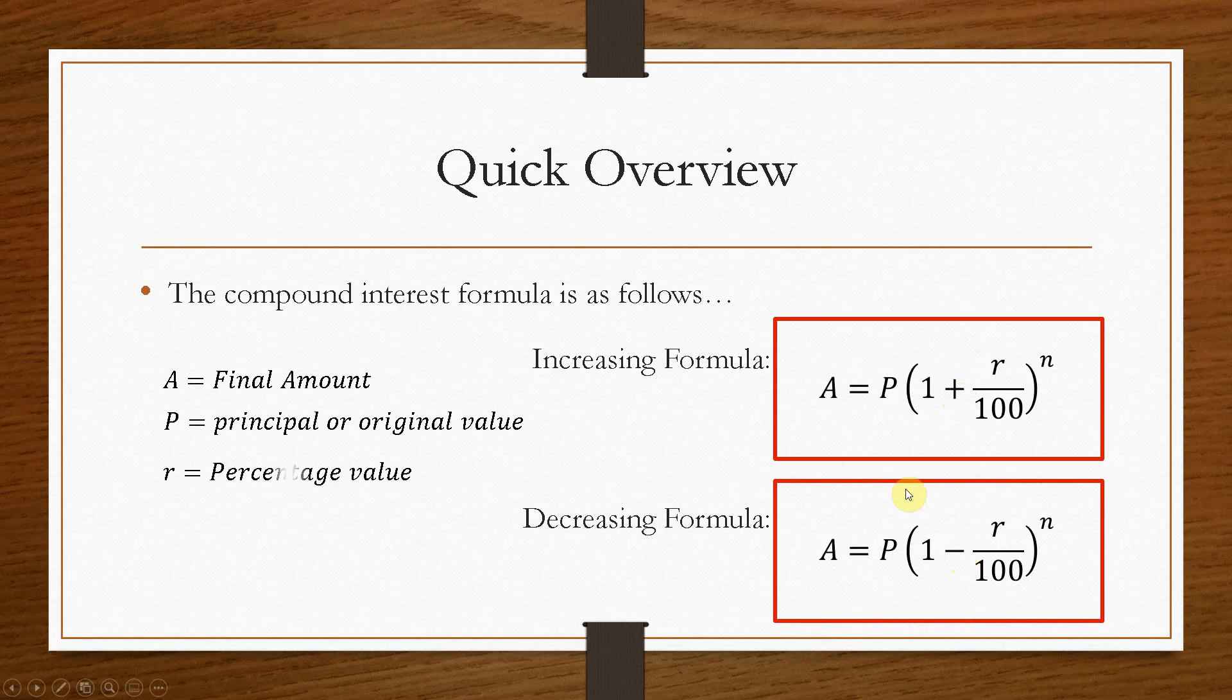And then the variables that we have: A, P, R, and N. A is the final amount, so that's the thing that we are going to calculate. P is the principal or the original value, so that's the value it will give us in the problem. R is the percentage value, so we put R in as a percentage and divide it by 100 to get it in its decimal form.